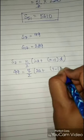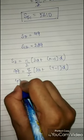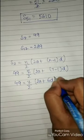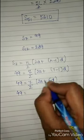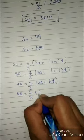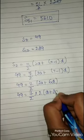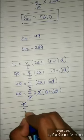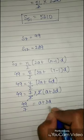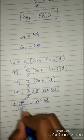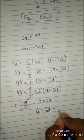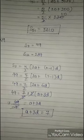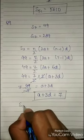Taking 2 common: 49 = 7/2 × 2 × (a + 3d). The 2s cancel and 7 goes to denominator: 49/7 = a + 3d. Solving, we get our first equation: a + 3d = 7.